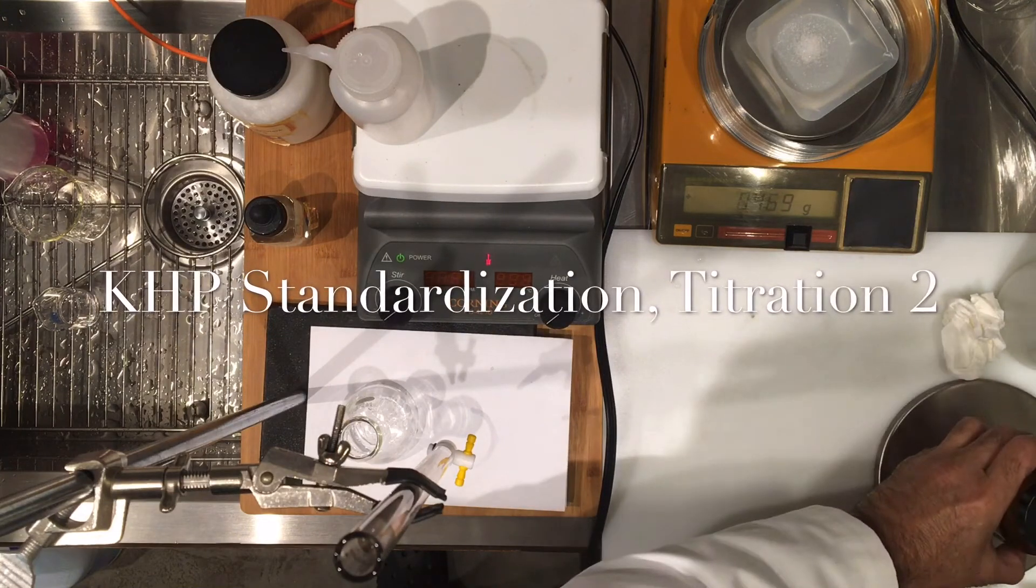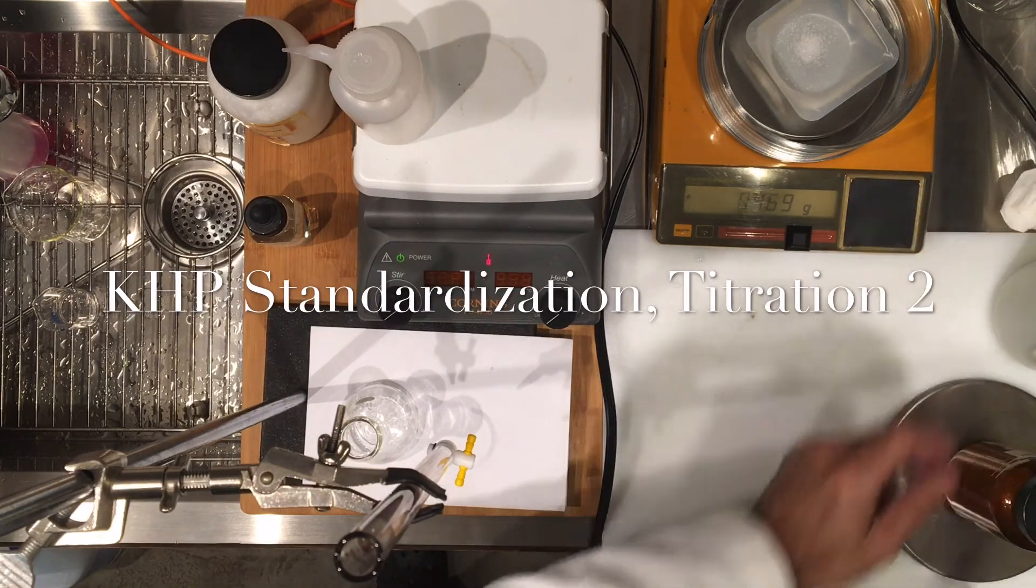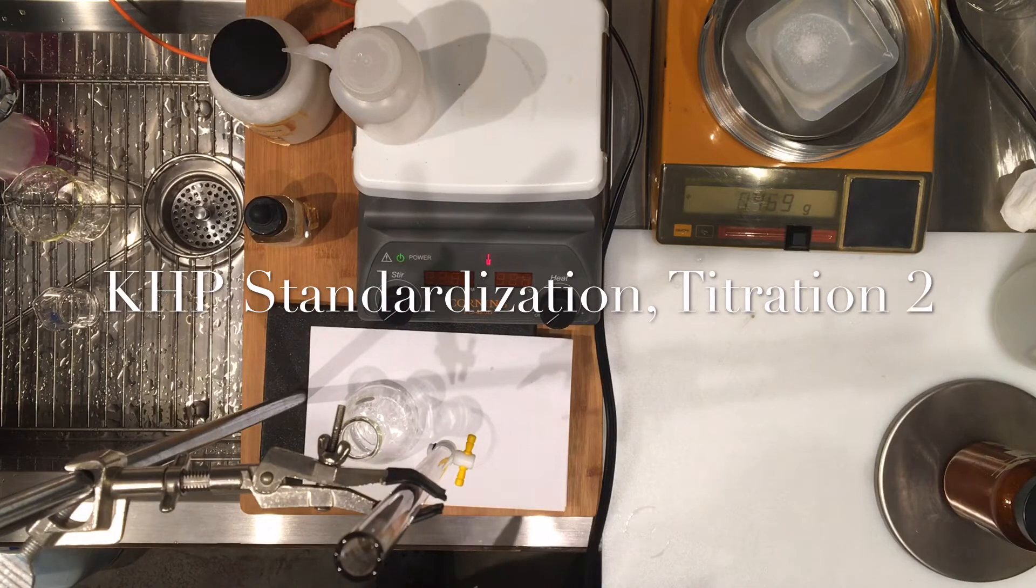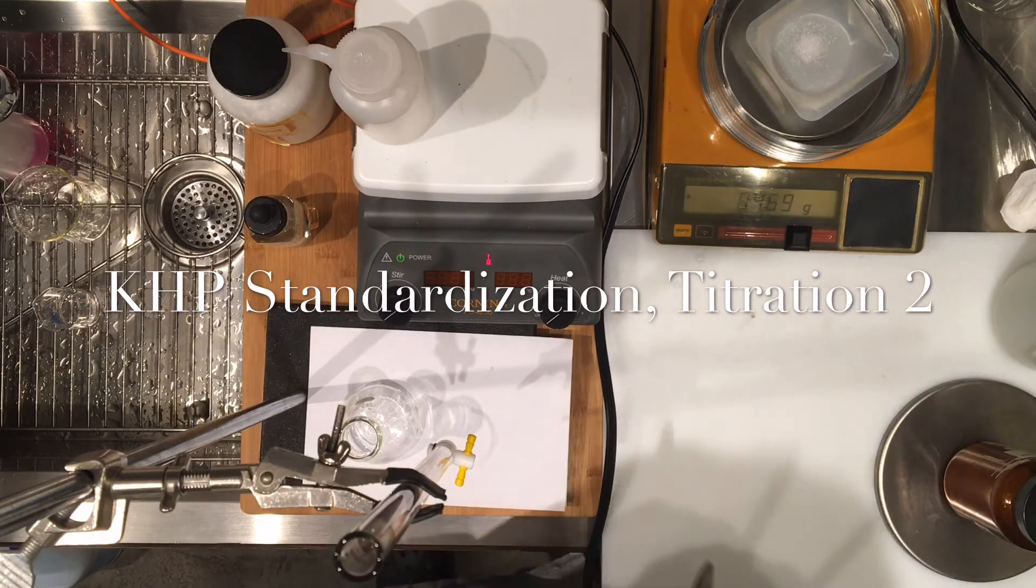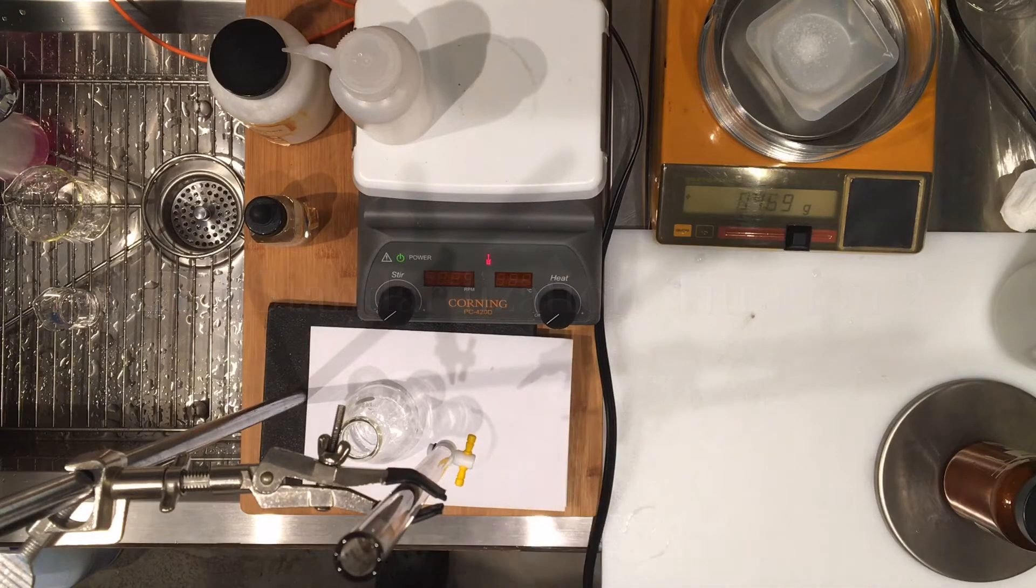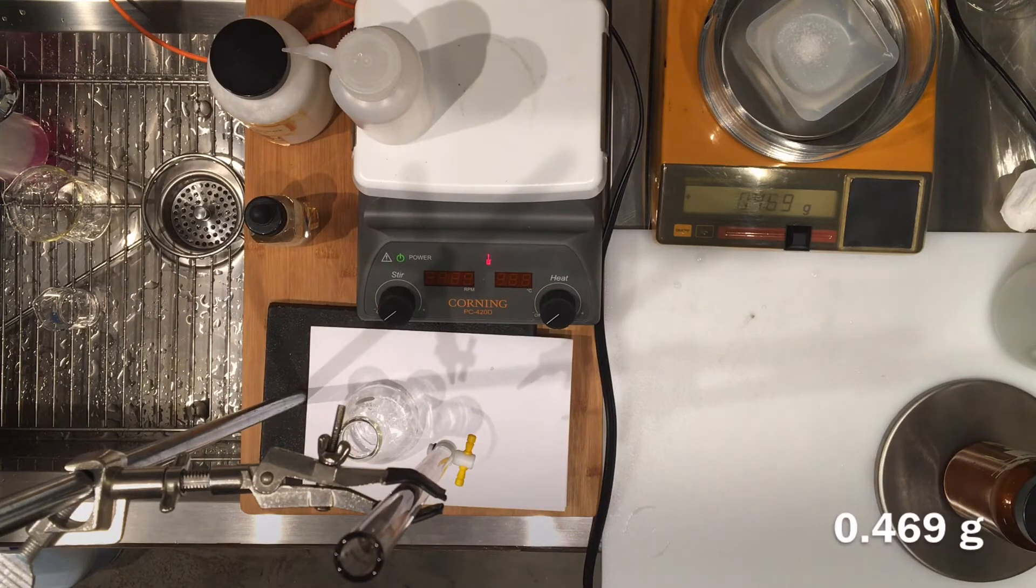Titration number two of standardization of sodium hydroxide using KHP. Here's the mass of KHP, please record that: 0.469 grams of KHP. This is for my trial two, so write that into your lab notebooks.